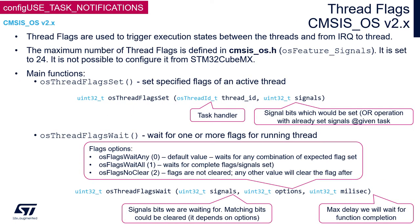To use thread flags within CMSIS-OS v2, we need to enable configUSE_TASK_NOTIFICATIONS in the FreeRTOSConfig.h file. Thread flags are used to send small portions of data, up to 24 bits, between tasks or threads, or from an IRQ to a task. A single thread flag is defined as a bit. The maximum number of thread flags is defined within CMSIS's cmsis_os.h file as osFeature_Signals and is equal to 24. It is not possible to configure this from STM32CubeMX nor STM32CubeIDE.